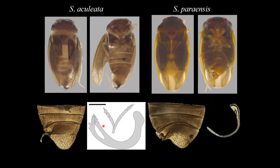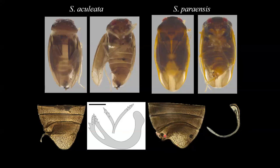By combining these two features — the subgenital plate projection and the right conjunctival appendage — we can now easily distinguish species within Zygoflaps. For example, Schizoptera goliata has a needle-shaped projection of the subgenital plate and a bifid right conjunctival appendage with a bunch of spines at the tip. And Schizoptera pyroensis has a heart-shaped subgenital plate and a very simple right conjunctival appendage.